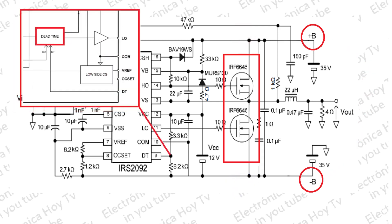Para evitar esta peligrosa situación, se introduce dentro de los diseños lo que se denomina el tiempo muerto, que consiste en un periodo calculado de tiempo que se introduce entre la transición del estado alto al estado bajo del pulso PWM, y en el cual ninguno de los transistores trabaja en lo absoluto.